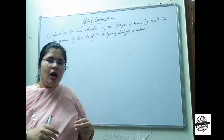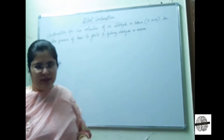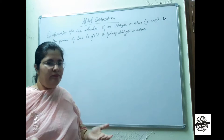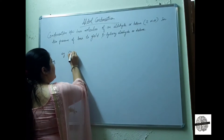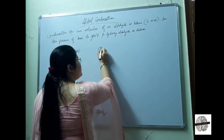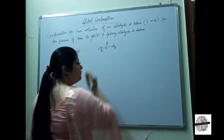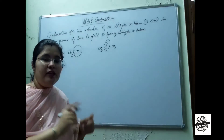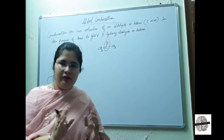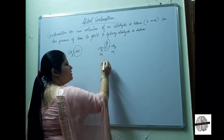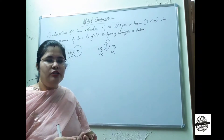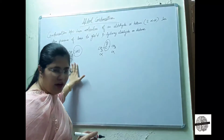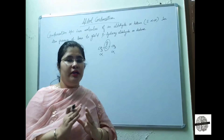The key condition is alpha hydrogen. You can take two molecules of aldehyde or ketone and react them in basic conditions. For example, CH3CHO (acetaldehyde) and CH3COCH3 (acetone). The carbon directly attached to the functional group is the alpha carbon, and the hydrogens attached to the alpha carbon are alpha hydrogens. These types of molecules will participate in the aldol condensation.